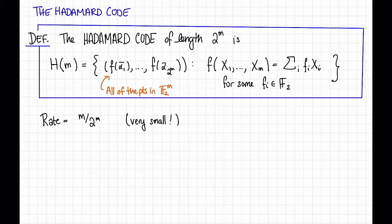So this is not a very good code as far as the rate is concerned. However, the code does have really good distance. You can check that the distance of this code is 2^(m-1), or rather that the relative distance of this code is a half, so the distance is very large.